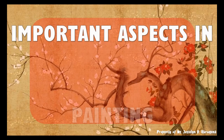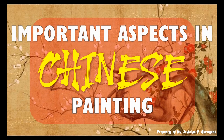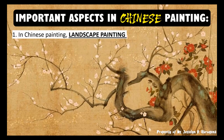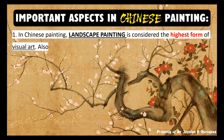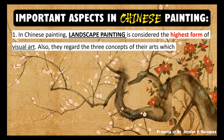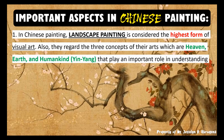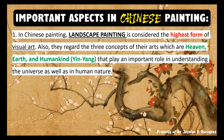There are seven important aspects in Chinese painting that you need to understand. First, in Chinese painting, landscape painting is considered the highest form of visual art. Also, they regard three concepts in their arts: heaven, earth and humankind, and yin-yang, which play an important role in understanding the universe as well as human nature.